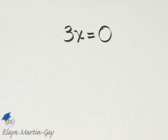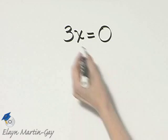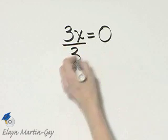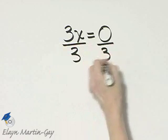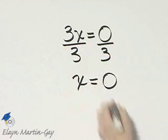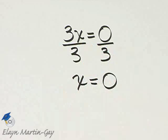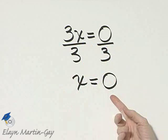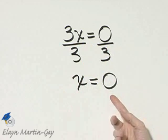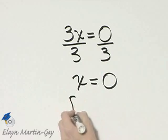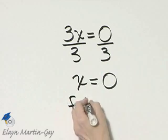That is false because this equation can be solved for x, and the x value of at least one ordered pair solution is 0. So the answer there is false.